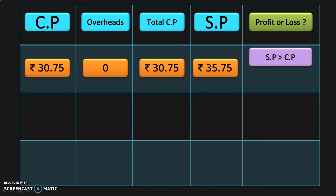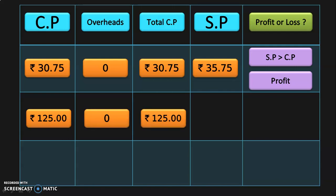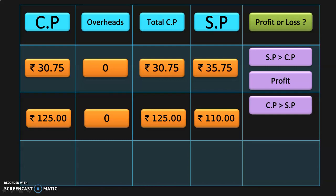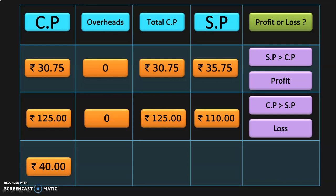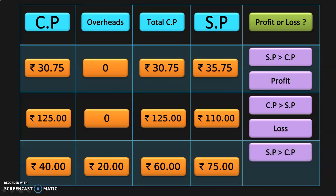In this case, selling price is greater than cost price, so the transaction results in a profit. Next, cost price is Rs. 125, there are no overhead costs, so total cost price is Rs. 125. Selling price is Rs. 110. Here, selling price is lesser than cost price, so the transaction results in a loss. Next, cost price is Rs. 40, overhead cost is Rs. 20, so total cost price is Rs. 60. Selling price is Rs. 75. Selling price is greater than total cost price, so the transaction results in a profit.